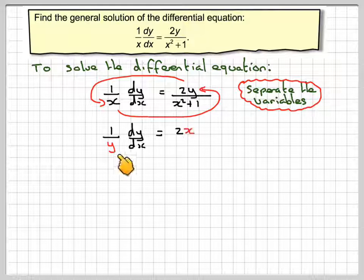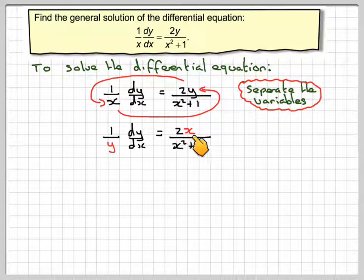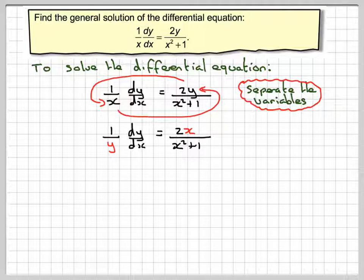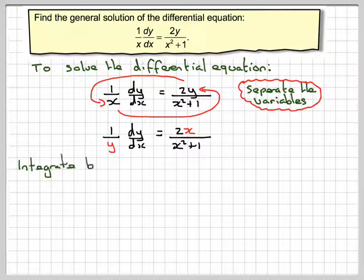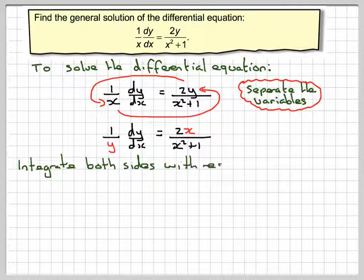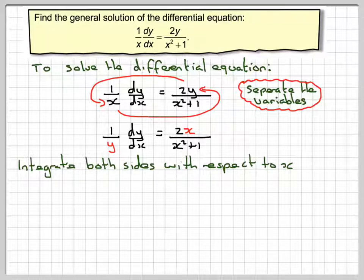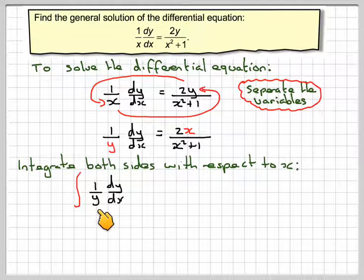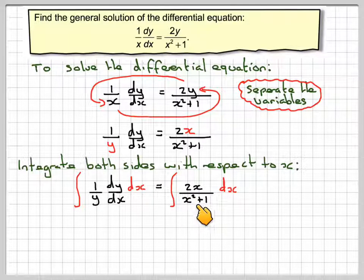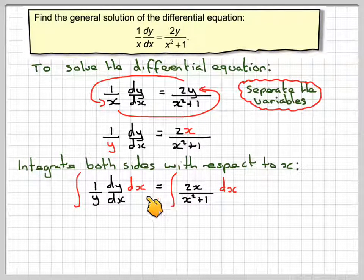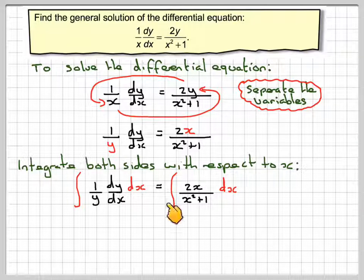So here we get 1 over y dy by dx equals 2x over x squared plus 1. Now you integrate both sides with respect to x. So you integrate 1 over y dy by dx dx equals the integral of 2x over x squared plus 1 dx. Integral sign on both sides and a dx on both sides.